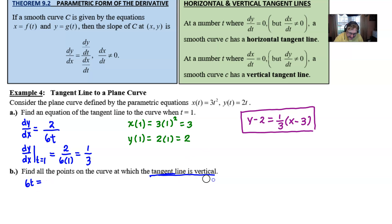And we end up with 6t. I'm sorry, dx/dt. Let me get that straight. The tangent line as vertical is the same as saying when is dx/dt equal to 0. And so then I just set my 6t equal to 0,